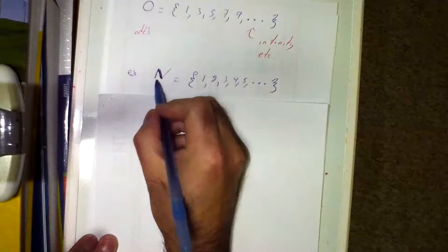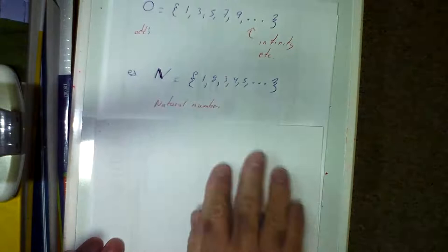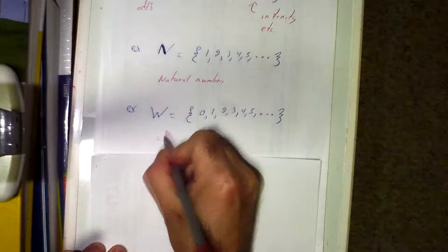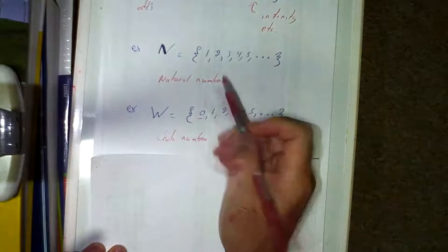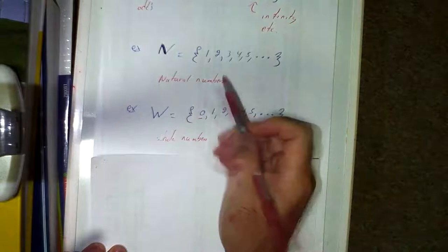There's a symbol that looks like an N with the middle strokes darker — that represents the natural numbers, starting at 1, 2, 3, 4, 5, and continuing. The W represents the whole numbers. The difference between whole numbers and natural numbers is that whole numbers start at zero, whereas natural numbers start at one. So whole numbers are 0, 1, 2, 3, 4, and so on.